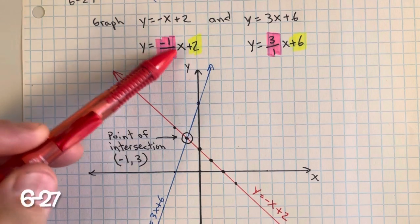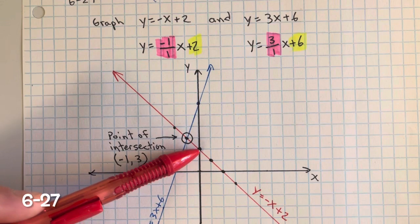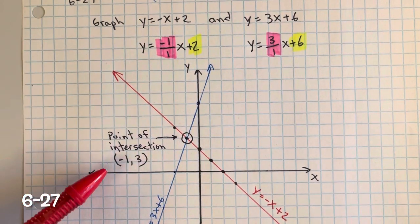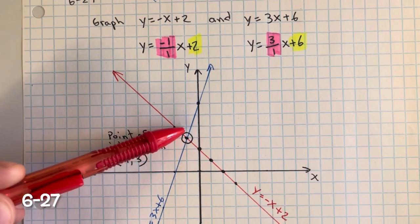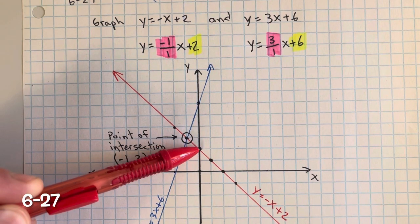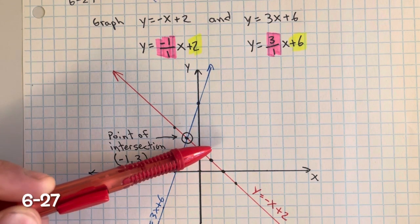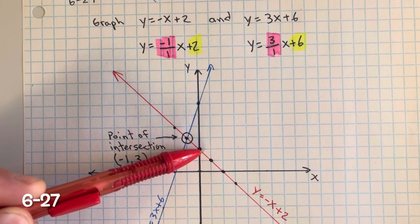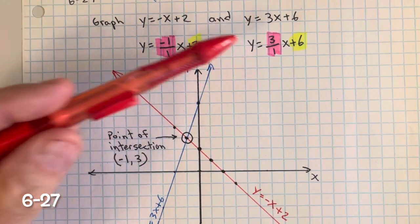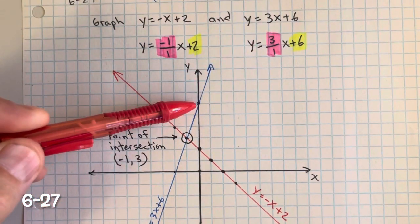To graph the first equation, I start at positive 2 on the y-axis. The slope is negative, so I know the line will slope toward the negative x values. It has a rise of negative 1 and a run of positive 1. For the second equation, I start at positive 6 on the y-axis as my y-intercept, and I have a positive slope of rise 3, run 1.